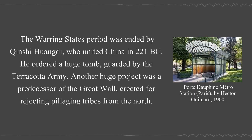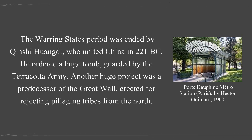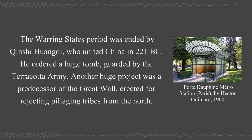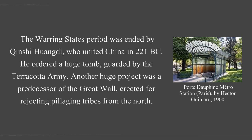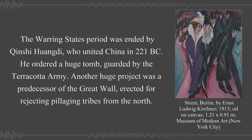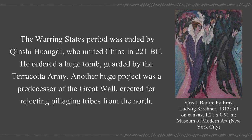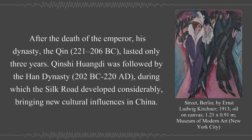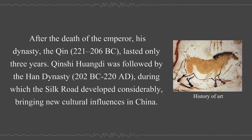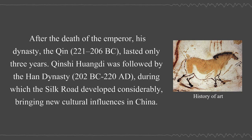The Warring States period was ended by Qin Shi Huangdi, who united China in 221 BC. He ordered a huge tomb guarded by the Terracotta Army. Another huge project was a predecessor of the Great Wall, erected for rejecting pillaging tribes from the north. After the death of the emperor, his dynasty, the Qin, 221–206 BC, lasted only three years.